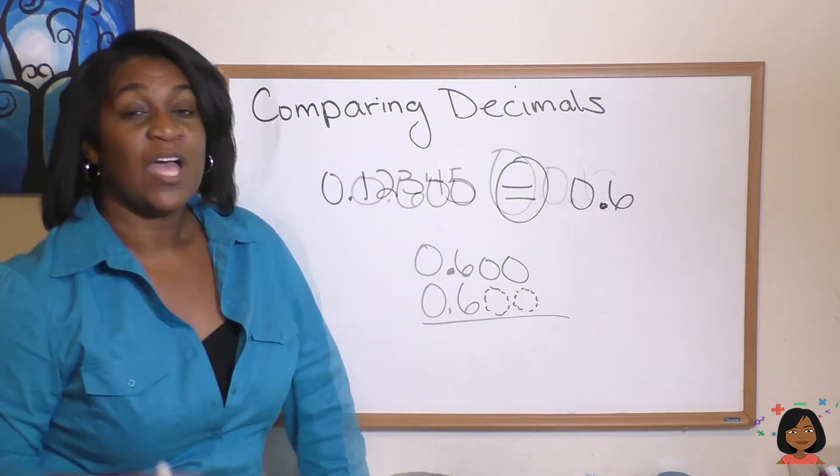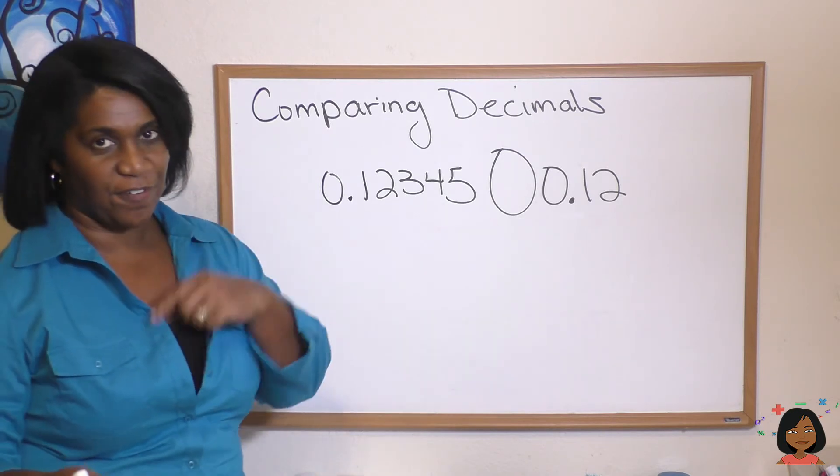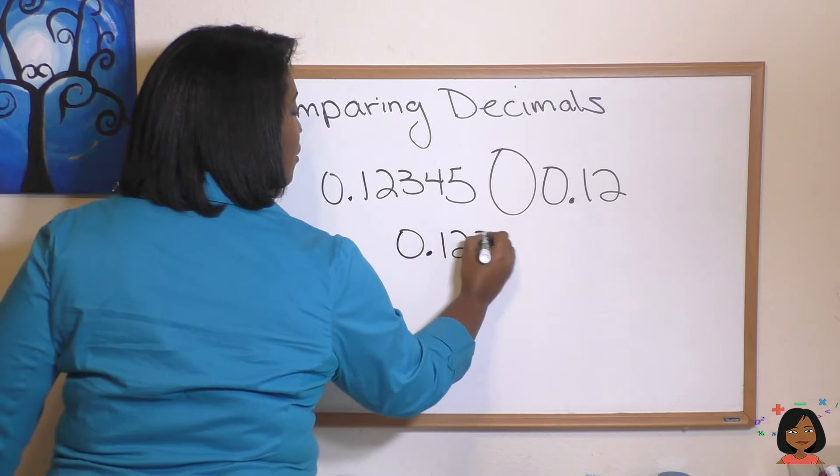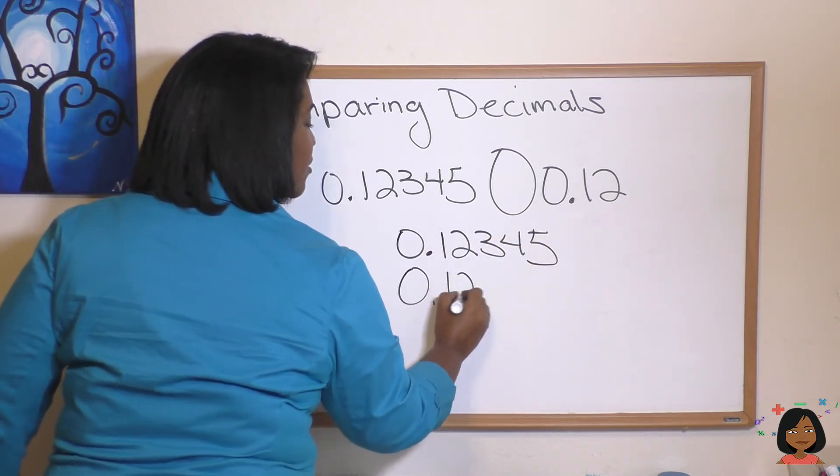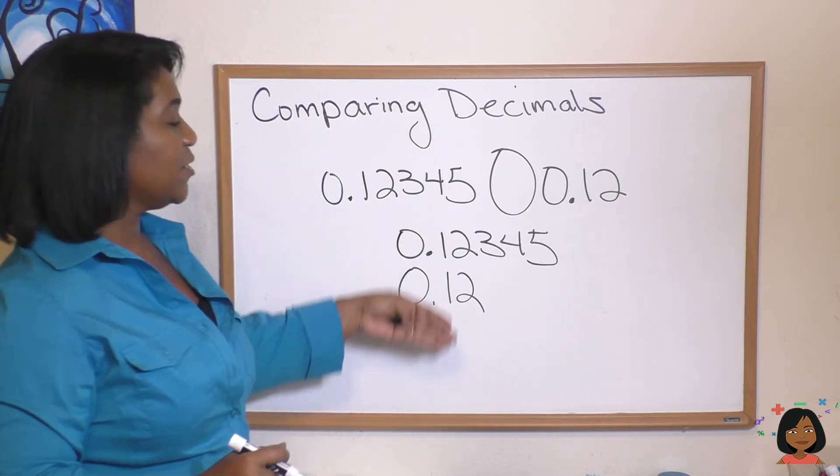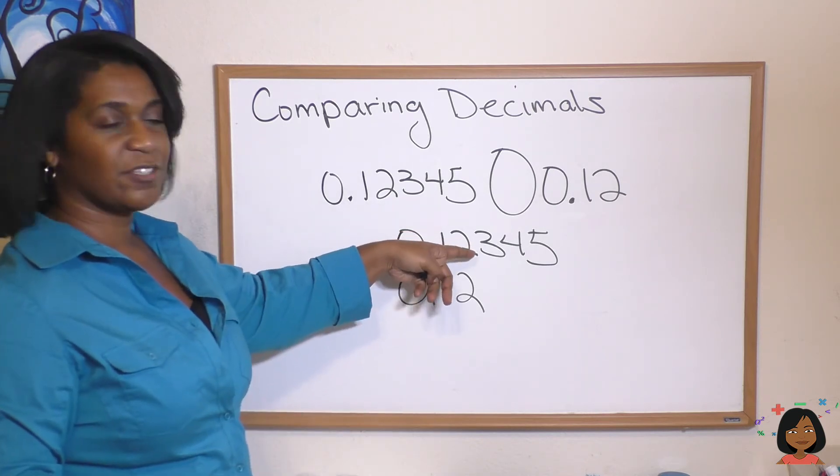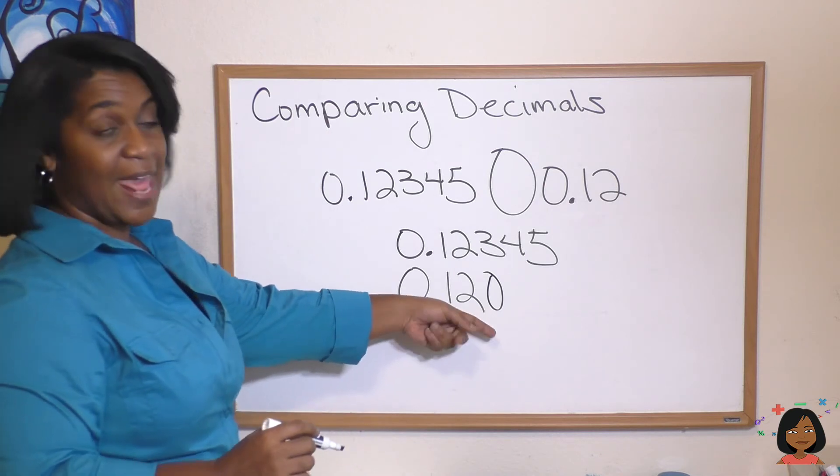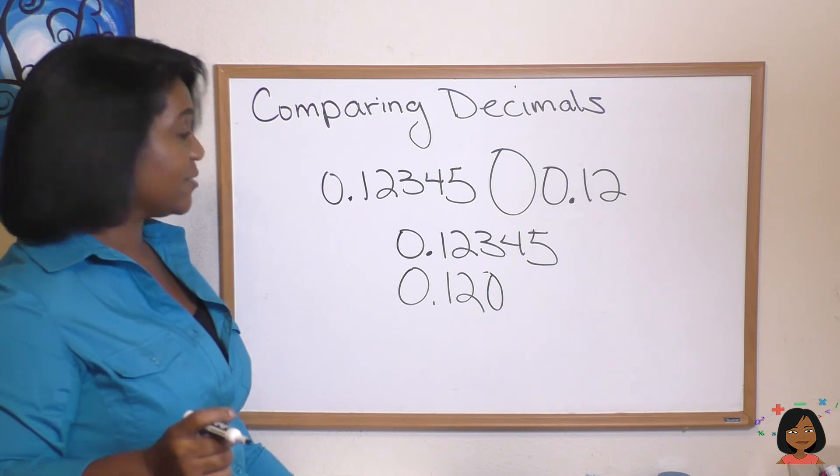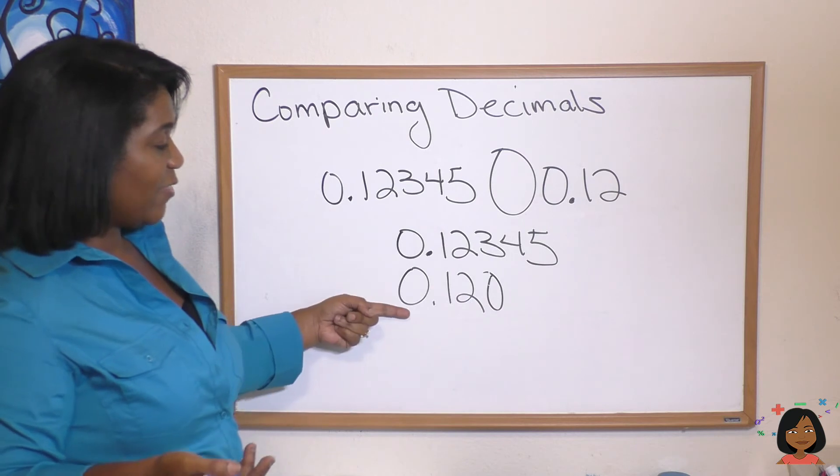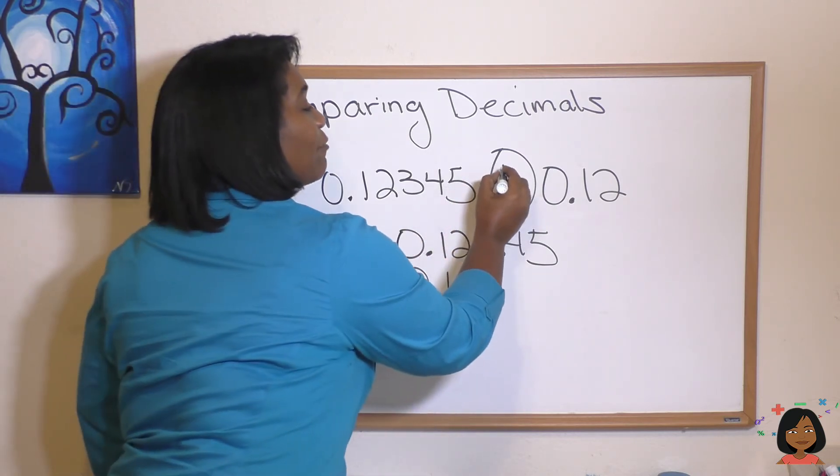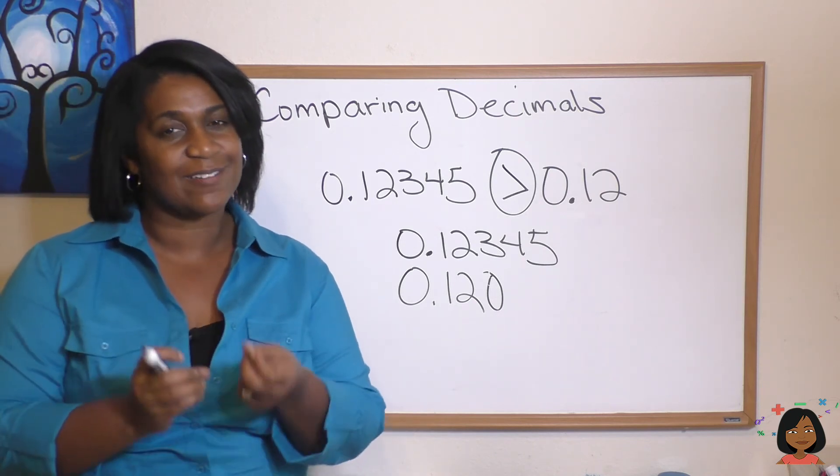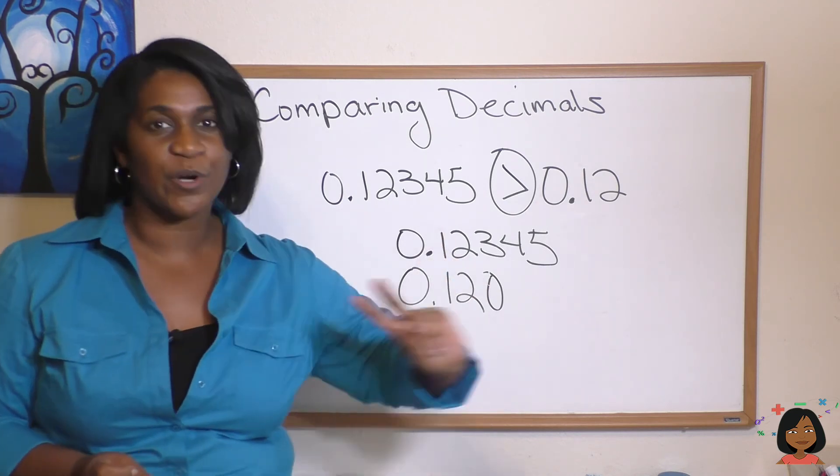One last example: 0.12345 compared to 0.12. Let's line them up with the decimals and see what happens: 0.12345 and 0.12. Look at the tenths place: the same. The hundredths place: the same. When we get here to the three, well what do we know is happening down here? Even though we don't see anything, we know that it's a zero. We're going to compare what's in the thousandths place: zero and a three. Which one is smaller? The zero is, so we know that this number is smaller than this number. So our correct comparison symbol is greater than. All different sorts of ways to look at decimals, but it all boils down to the same thing: compare place values, start with the tenths, and work your way to the right if you need to.